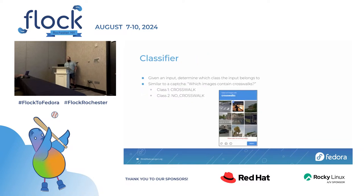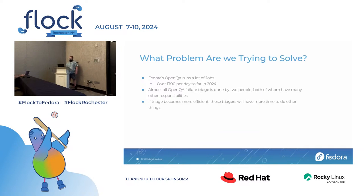For what I'm talking about today, I'm most interested in these screenshots. When I say classifier, it's pretty much what it sounds like: given an input, what does it belong to? Very similar to a CAPTCHA, where you're trying to classify little images — does it have a crosswalk or not? That's a great example of a binary image classifier.